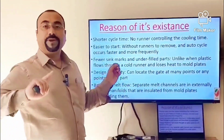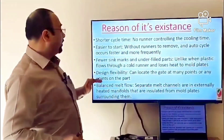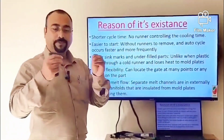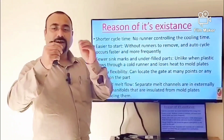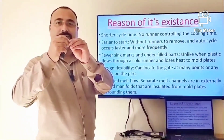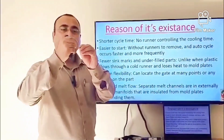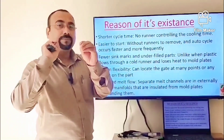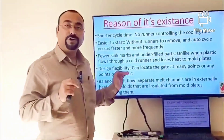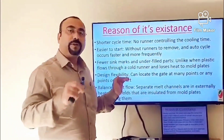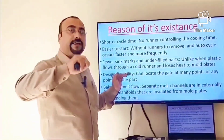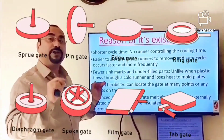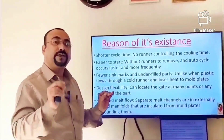The fourth benefit is design flexibility. Earlier, the gate had to be placed at the start of the cavity because placing it on the side would result in uneven material flow. But now, since all areas are heated in the hot runner system, the molten plastic reaches the cavity uniformly, allowing you to place the gate anywhere throughout the part.